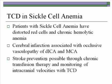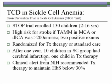Stroke prevention is possible through chronic transfusion therapy, and other drugs are also being evaluated. The initial landmark study was the Stroke Prevention Trial in Sickle Cell Anemia, or STOP trial, which enrolled 130 children between the ages of 2 and 16 years. High risk of stroke was defined as a mean velocity in the MCA or distal internal carotid greater than 200 cm/s on two positive exams. After one year, ten children in the standard care group had experienced a cerebral infarction compared to only one child receiving transfusion therapy. A clinical alert from the NIH recommended transfusion therapy to maintain hemoglobin S below 30%.